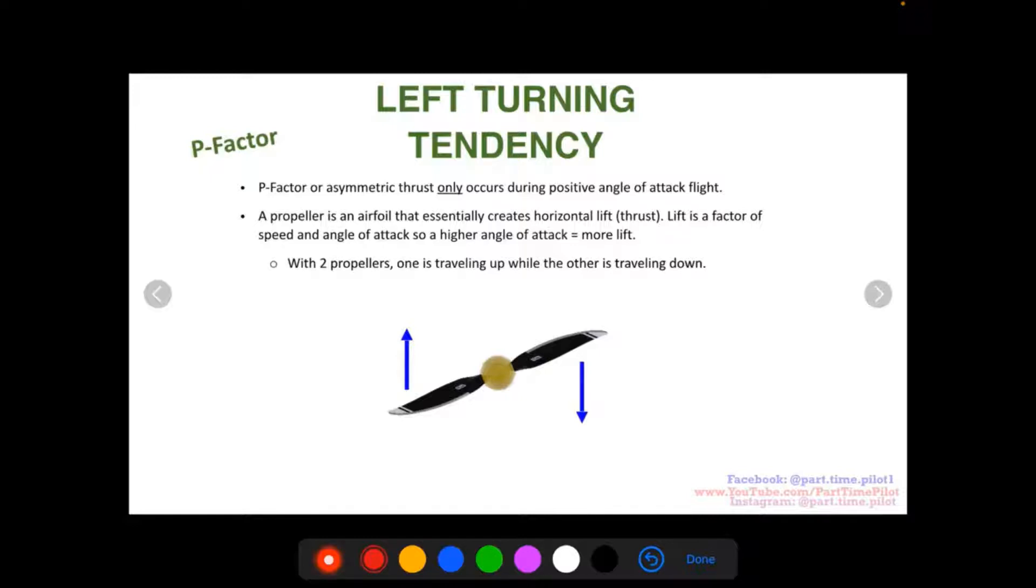And we know that lift is a factor of speed and angle of attack. So a higher angle of attack equals more lift, aka more horizontal lift. In this case, when we're talking about propellers, aka more thrust. So remember that higher angle of attack equals more thrust.